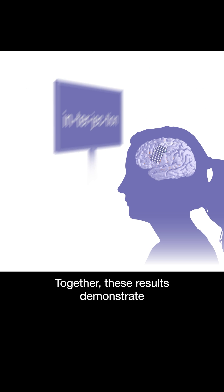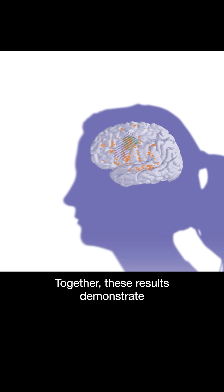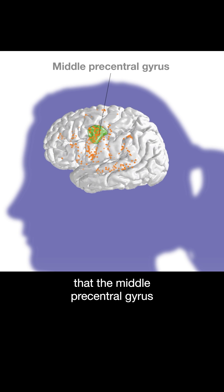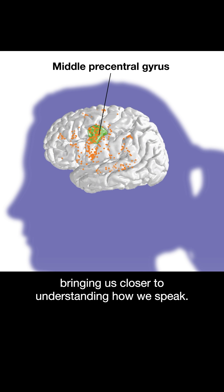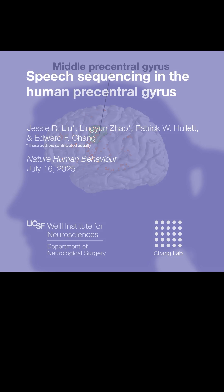Together, these results demonstrate that the middle precentral gyrus plays a central role in speech motor sequencing, bringing us closer to understanding how we speak.